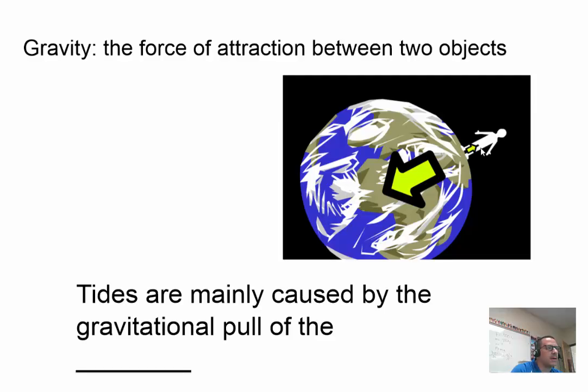Now what we don't often think about is that man also has mass. He is pulling the Earth towards him, but his mass is so small that that really doesn't make that big a difference. So tides are mainly caused by the gravitational pull of the Moon.